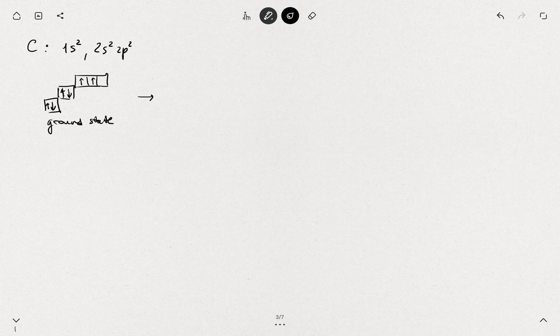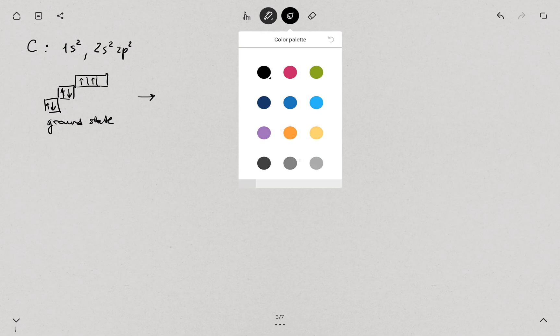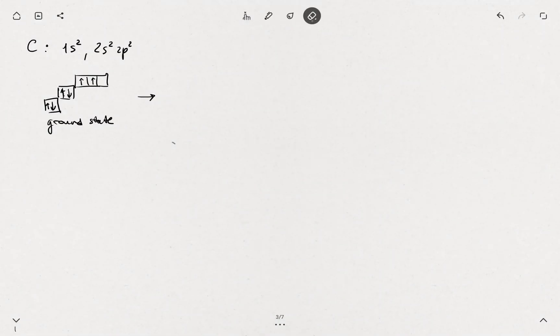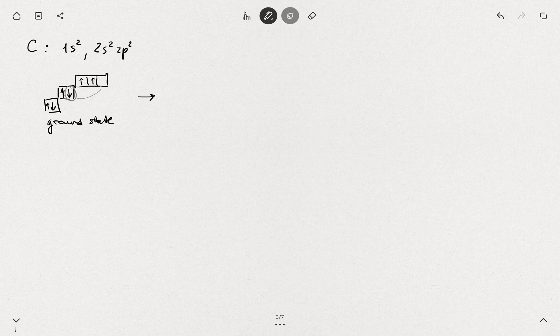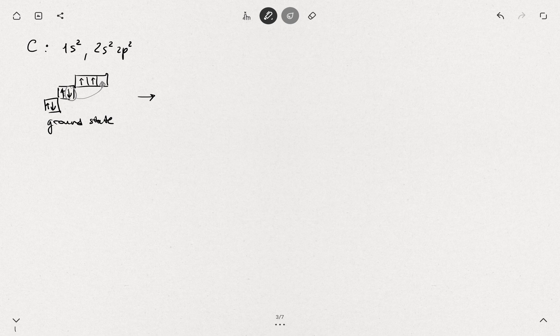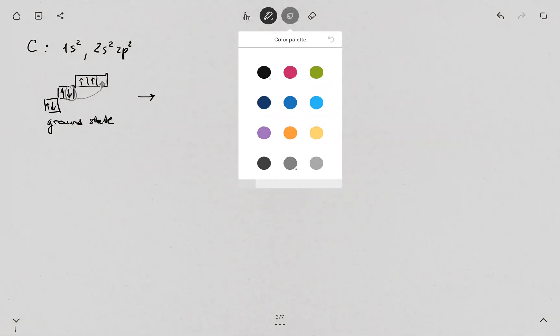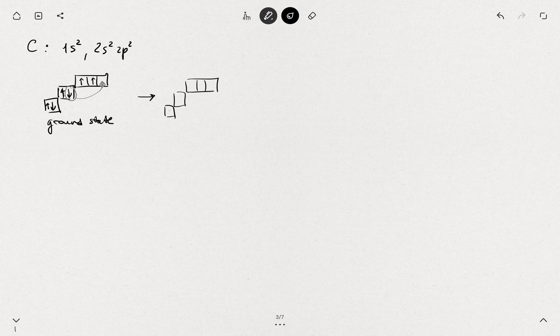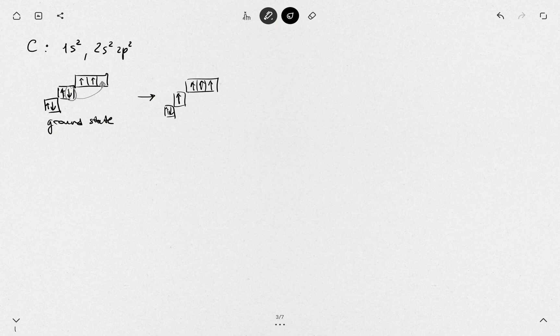There's also an excited state that exists where one of these 2s2 electrons is promoted to the 2p orbital. Then you will have the following structure in the excited state.